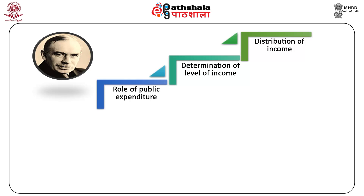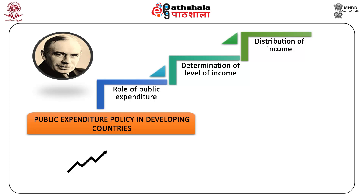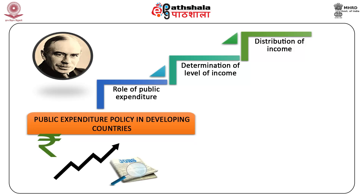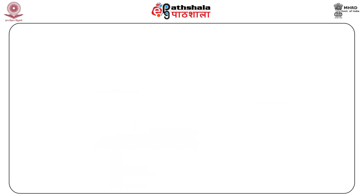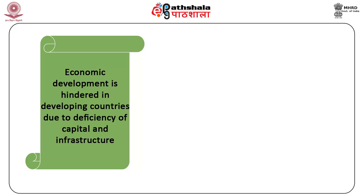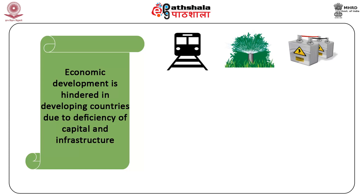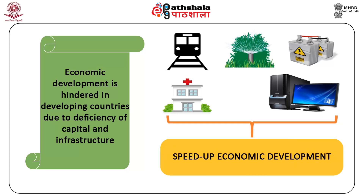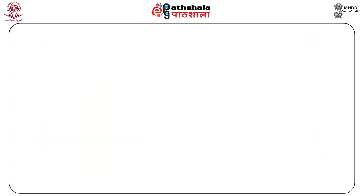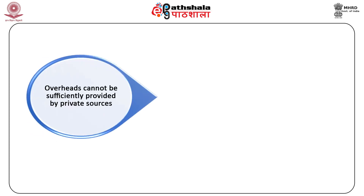In developing countries, public expenditure policy not only accelerates economic growth and promotes employment opportunities, but also plays a useful role in reducing poverty and inequalities in income distribution. In developing countries, economic development is hindered due to the deficiency of capital and infrastructure. Economic and social overheads, such as roads and railways, irrigation and power projects, hospitals, and technical institutions are essential for the speeding up of economic development. In poor economies, capital investment for such overheads cannot be sufficiently provided by private sources.